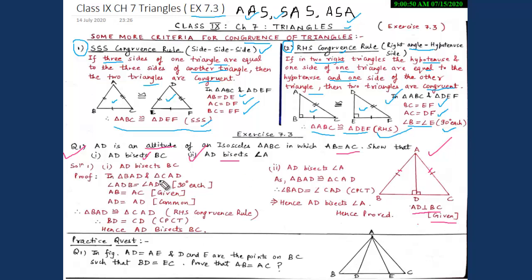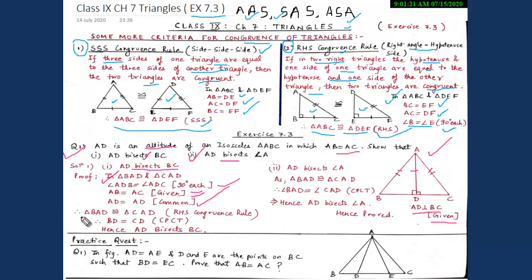To prove Part 1 — that AD bisects BC — we consider triangles BAD and CAD. In these two triangles: angle ADB equals angle ADC, each being 90 degrees; AB equals AC, since ABC is isosceles; and AD equals AD, as it is the common side. Therefore, triangle BAD is congruent to triangle CAD by RHS congruency criteria. By CPCT, BD equals CD, so AD bisects BC.